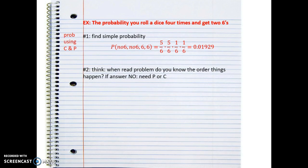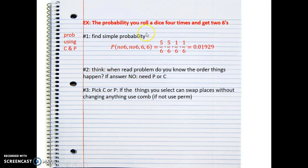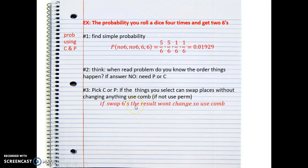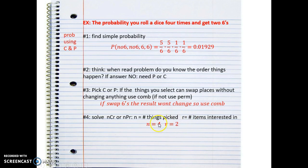To take it up a notch, look harder and think: when you read the problem, do you know the order things happen? No, I don't actually know the order - it didn't tell me. So I need to use permutations or combinations. Step three: if the things you select can swap places without changing anything, you use a combination. Here, does it matter where those two sixes occur? Do I still have the end result of getting two sixes? Yes - it doesn't really matter. I can swap the two sixes and it's still two sixes, so I'm going to use combinations.